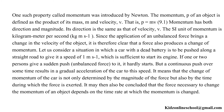One such property, called momentum, was introduced by Newton. The momentum p of an object is defined as the product of its mass m and velocity v. That is, p = mv. Momentum has both direction and magnitude. Its direction is the same as that of velocity. The SI unit of momentum is kilogram meter per second. Since the application of an unbalanced force brings a change in the velocity of the object, it is clear that a force also produces a change of momentum.